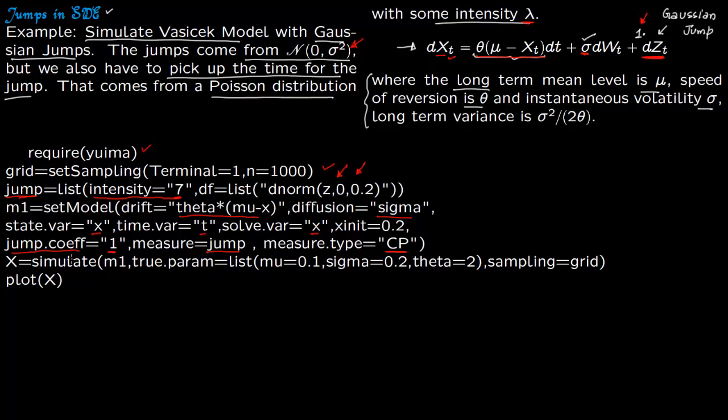Then we are just going to simulate it. Simulate this model M1 which I have just described. You are going to set the parameters. You have just three parameters: mu, sigma and theta. So you have theta here, mu here and sigma here. This you do not have to parameterize because we have already parameterized here with the intensity and the jump size. Sampling you are going to take from the grid. I am taking a thousand samples. And then we are going to plot it and see the jumps.